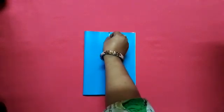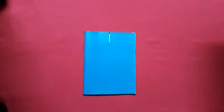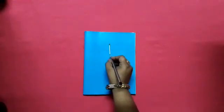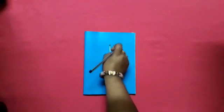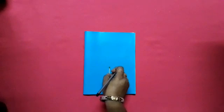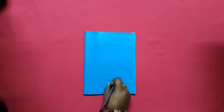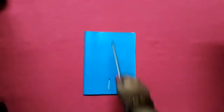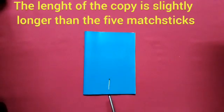Students, I have a copy. We will measure the length of the copy with matchsticks. How many matchsticks will equal the length of the copy? 1, 2, 3, 4, 5. The length of the copy is slightly longer than 5 matchsticks.